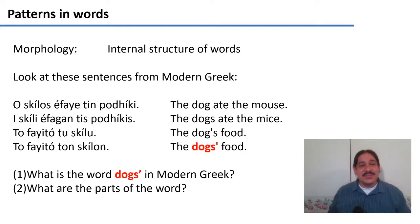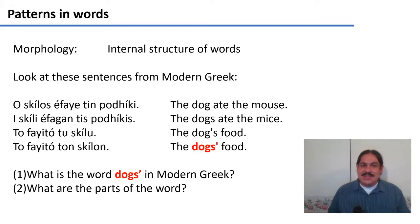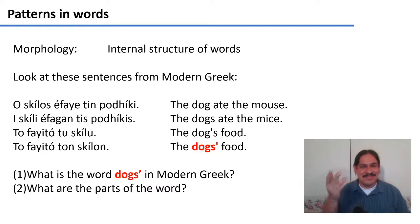Here's a second exercise in morphology using sentences from modern Greek. For example: 'The dog ate the mouse.' 'The dogs ate the mice.' 'The dog's food.' And finally, many dogs and their food. Take a look at those sentences and try to figure out what the word for 'dogs' belonging to many dogs is in modern Greek. Try to use knowledge from all of the sentences to figure that out, and then determine what its component morphemes are — what are the parts of the word for 'dogs' in Greek? Please pause the video.